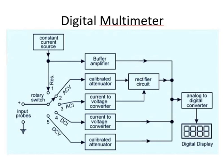When the rotary switch is put on the second position, that is AC voltage measurement, the input AC voltage is applied to the probes. If it is above the selected range, it is attenuated with the help of the calibrated attenuator. It is then rectified to produce a proportional DC voltage and given to the analog-to-digital converter, which displays it in volts. In this way, AC voltage is measured at position 2.